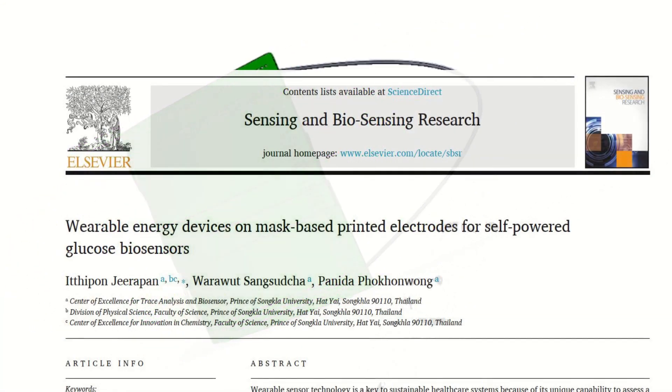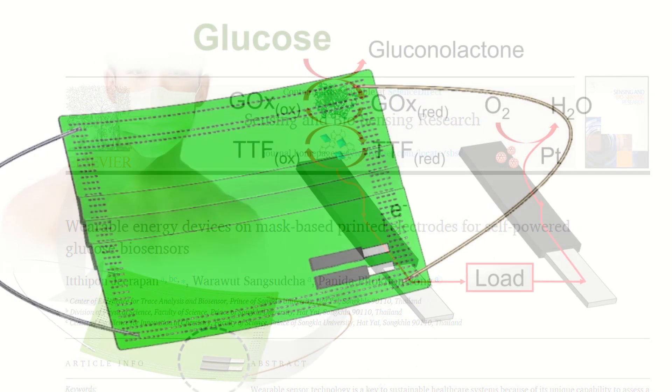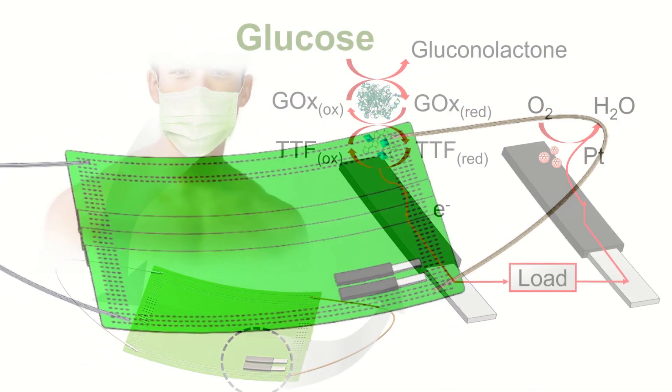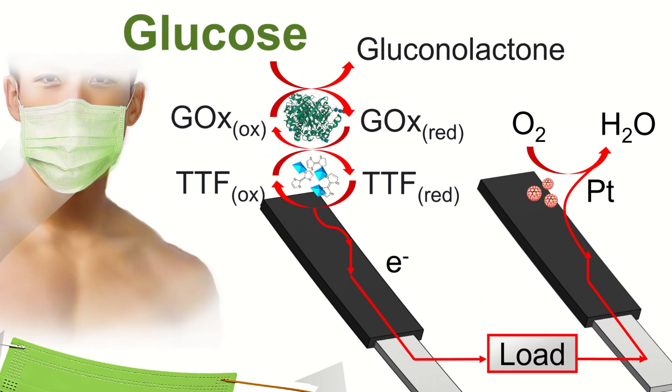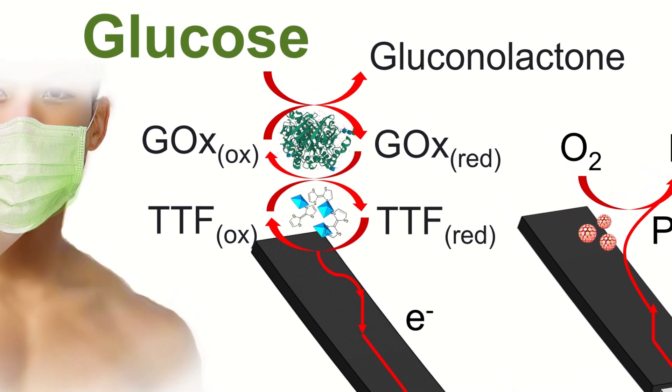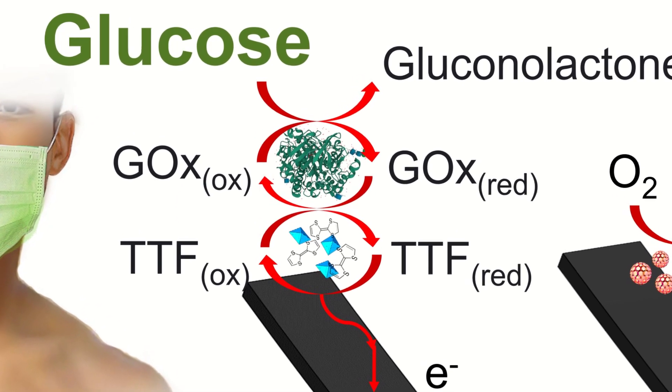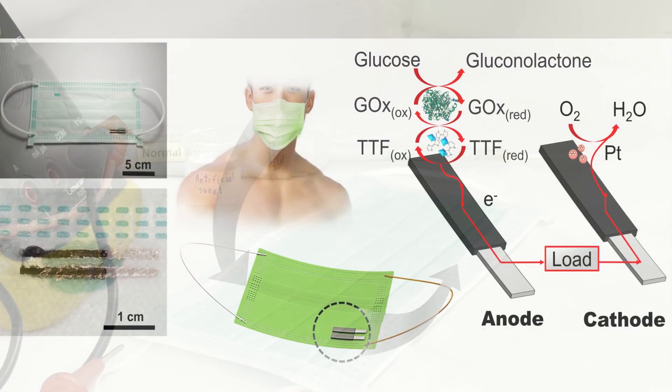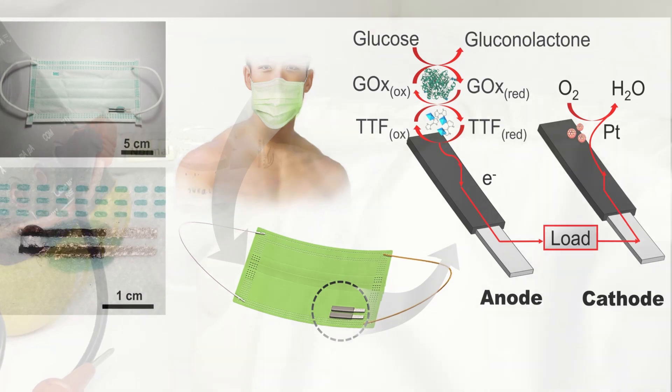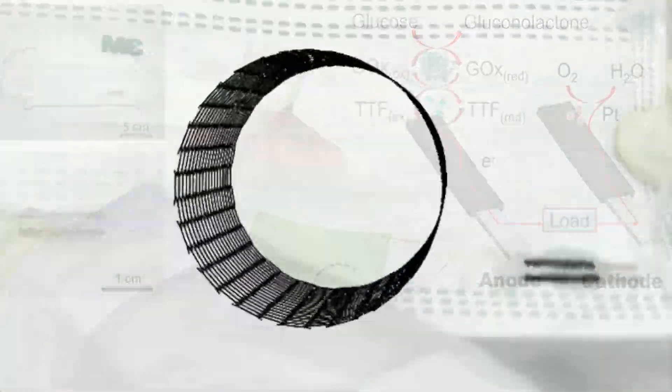Hithapon Jirapan and his colleagues have integrated enzymatic biofuel cell devices directly onto masks. This study introduces the first example of self-powered bioelectronics on a mask that can measure biological glucose signals by using energy extracted from sweat itself. This research leveraged printed biofuel cell-based carbon-nanotube-modified bioelectronics.